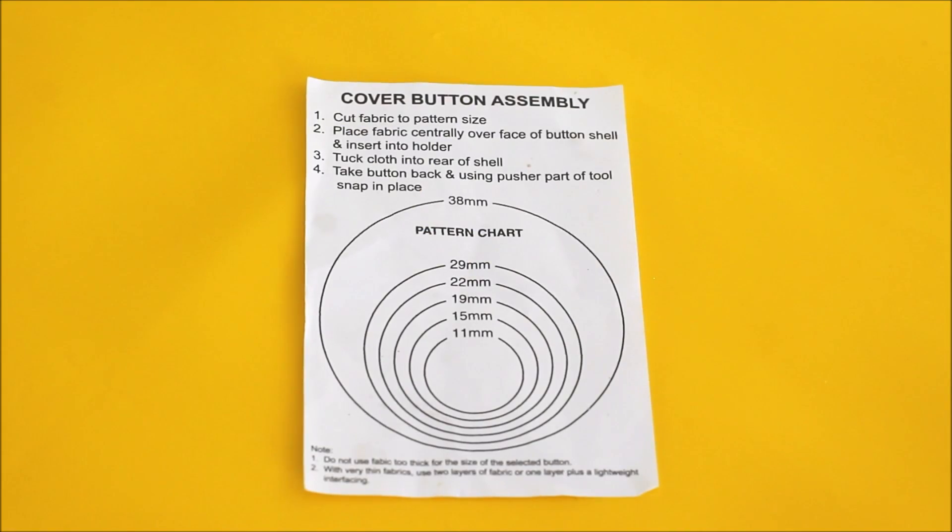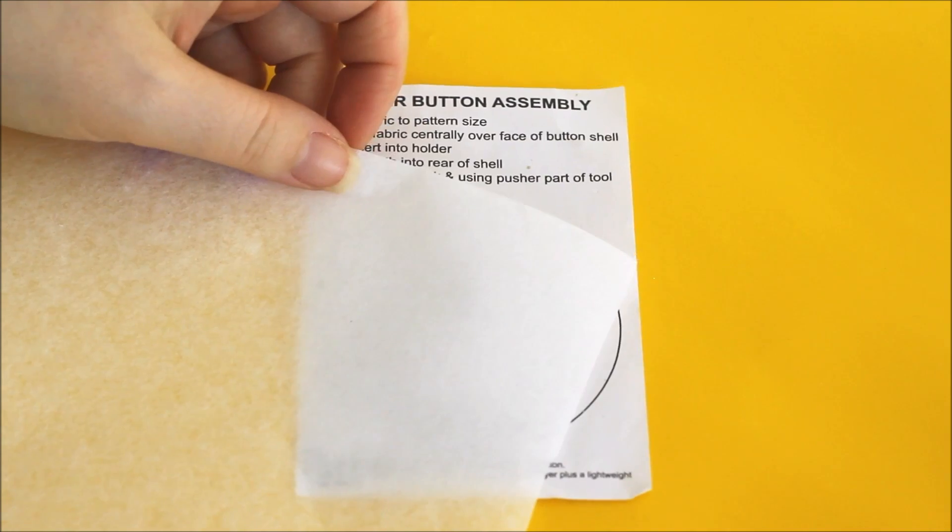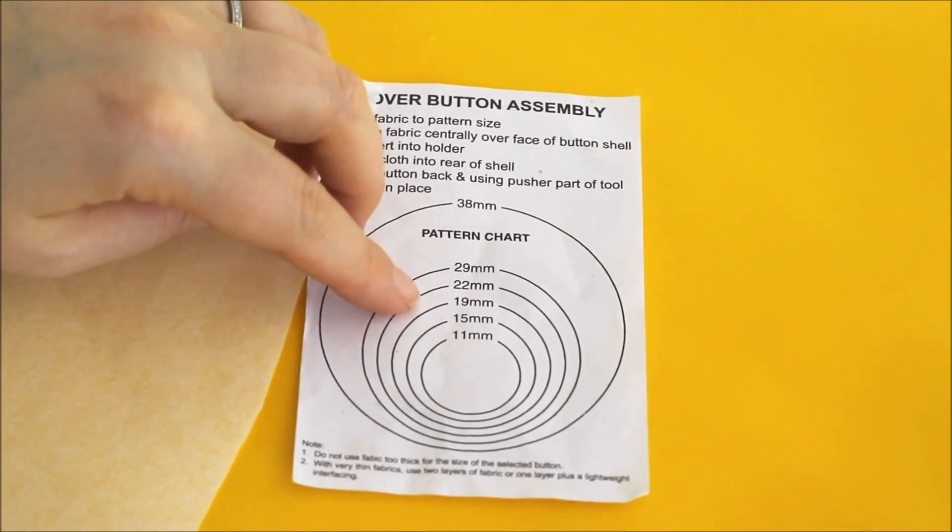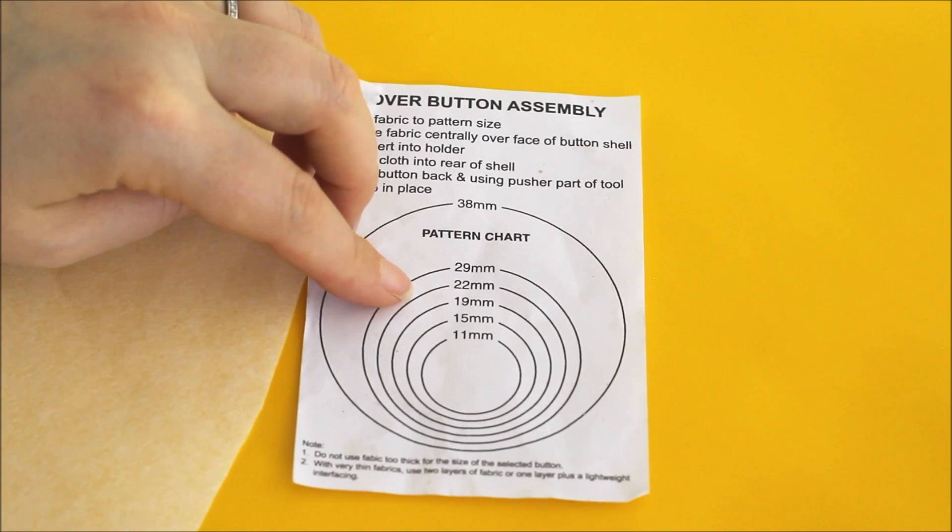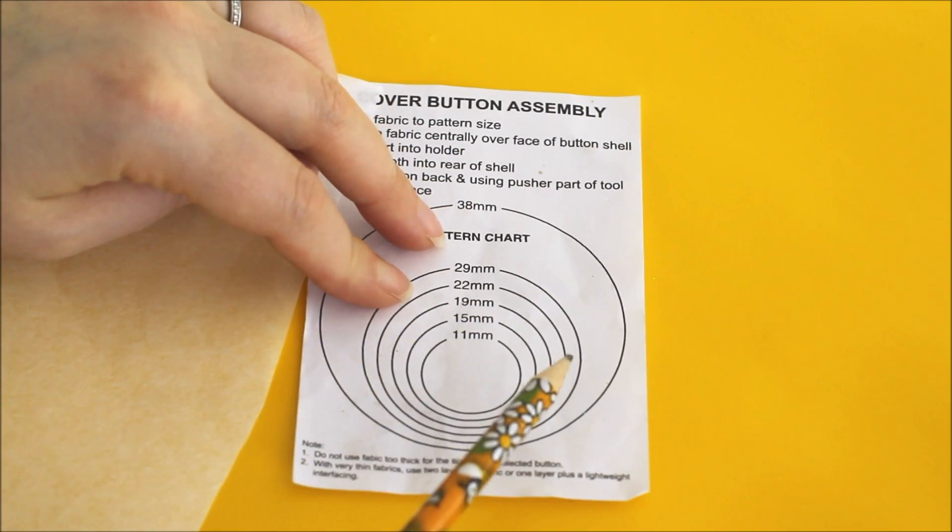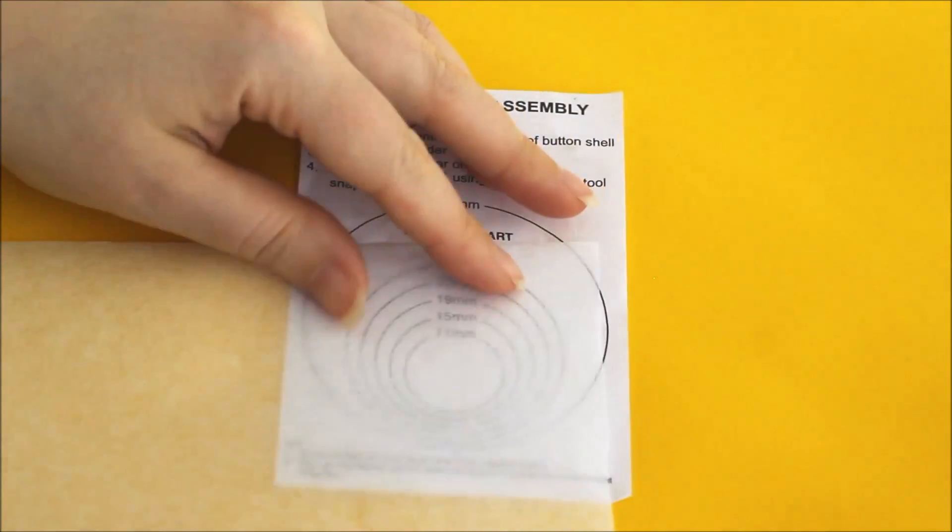So to be able to use the button chart, first we're going to want to make a copy of it. So you're going to need some tracing paper or some greaseproof paper or Fusa paper or whatever you have on hand. Have a look at what size circle you're going to want. We've got a 23mm button so that's going to follow the line for the 22mm. So you just place that over the top.